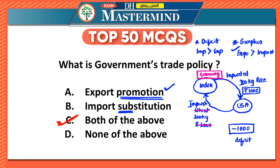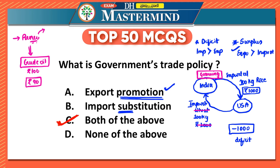Hence the answer is C — both of the above: export promotion and import substitution. The economy concentrates on improving exports and reducing imports. Taking India's example, we focus on renewable energy because our highest import expenditure is on crude oil. If we cater to energy needs through alternative sources, our dependency on crude oil reduces, saving foreign exchange reserves.